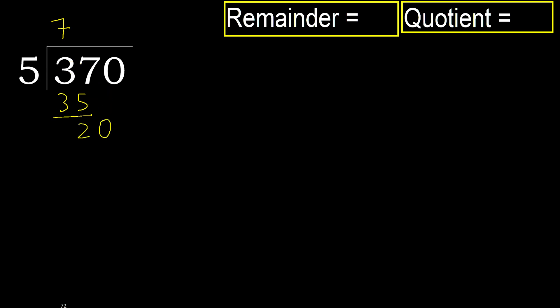5 multiplied by 5 is 25 — 25 is greater. Multiplied by 4: 5 multiplied by 4 is 20 — 20 is not greater, so subtract. Remainder: 0.